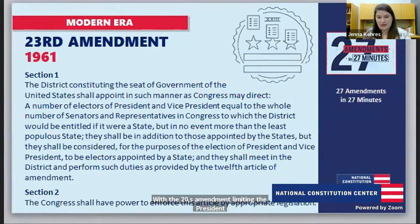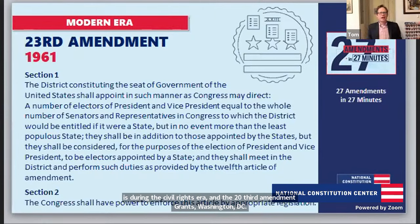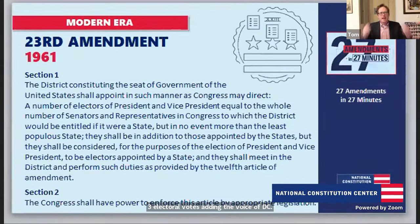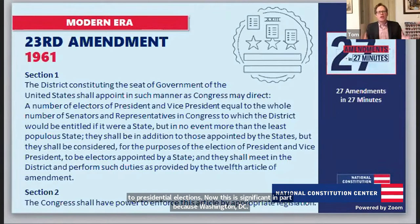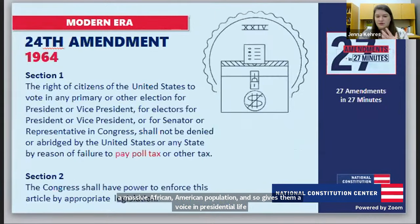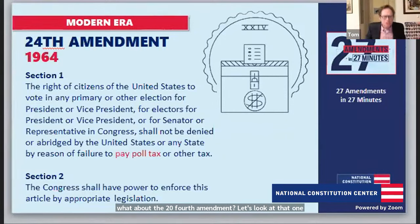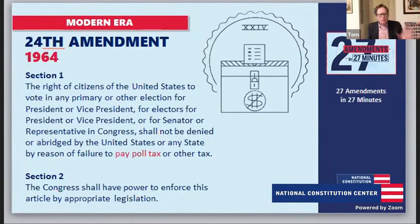The 23rd Amendment, ratified in 1961 during the Civil Rights era, grants Washington D.C. three electoral votes, adding the voice of D.C. voters to presidential elections. This is significant because Washington D.C. has a large African-American population. The 24th Amendment bans poll taxes in national elections. Poll taxes were state laws — part of Jim Crow — keeping African-Americans from voting. When we ratified the 24th Amendment, five states still had poll taxes: Mississippi, Texas, Virginia, Arkansas, and Alabama. The amendment banned them in national elections, and two years later the Supreme Court said they don't work in state or local elections either.